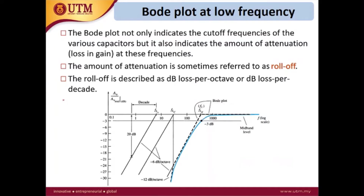Roll-off is described as dB loss per octave or dB loss per decade. It represents the reduction in gain at a certain frequency range. The gain is measured in dB and the decade refers to the frequency range or frequency change.